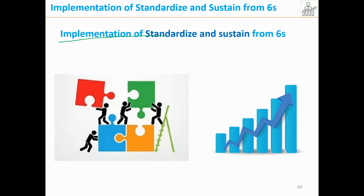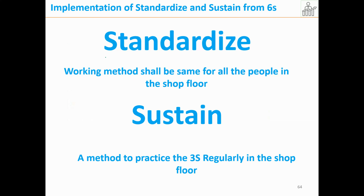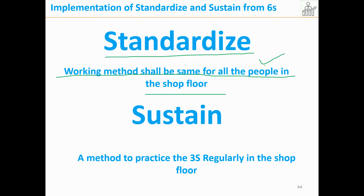Next is Standardize and Sustain. Standardize means the working method shall be the same for all people on the shop floor. We can make check sheets or mistake-proof methods. Sustain means having a method to practice the 3S — Sort, Set in Order, and Shine — regularly in the shop floor. We can use a checklist to ensure these activities are being followed every day, which is very important.